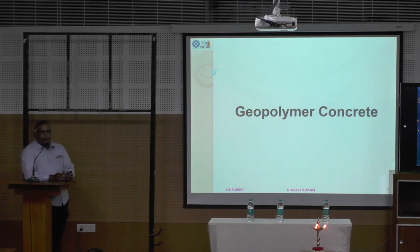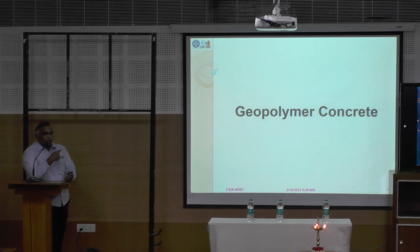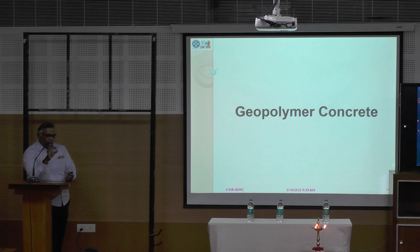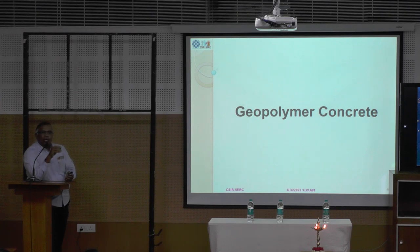When we move on to geopolymer concrete, it is 100% replacement of cement. So far, what has been attempted is fly ash only. Fly ash is siliceous or aluminosiliceous material which we react with an additional solution — sodium hydroxide and sodium silicate solution — for geopolymer concrete. That forms a gel called N-A-S-H. In OPC we call it CSH; in geopolymer we call it NASH. In mineral terms, we call it Trona or Natron. They are holding the aggregates.